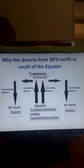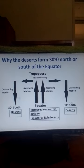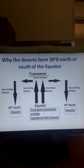The descending air warms the water on the land surface, and the water evaporates causing dry conditions. This is also where we have the semi-permanent high pressure systems, which are associated with the descending motion of air and dry conditions. This explains why we have the world's major deserts at around 30 degrees north or south of the equator.